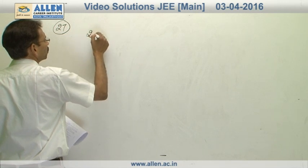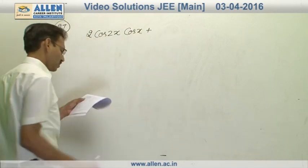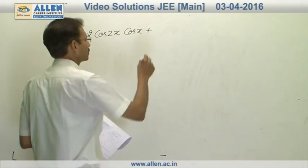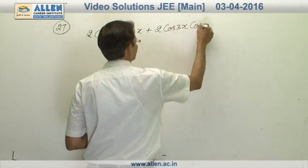It gives us 2 cos 2x into cos x plus. Now cos 2x plus cos 4x gives us 2 cos 3x into cos x equals to 0.